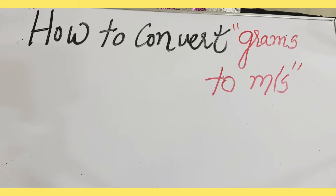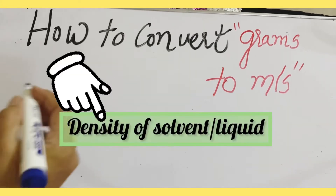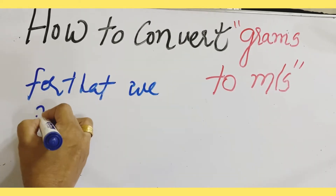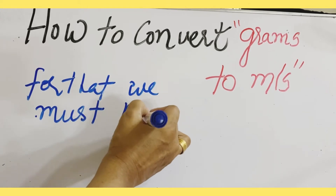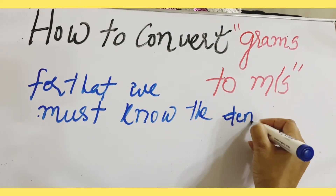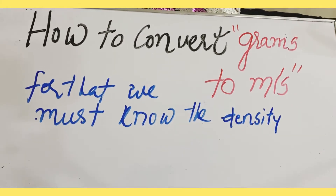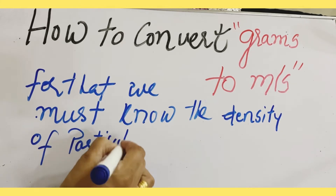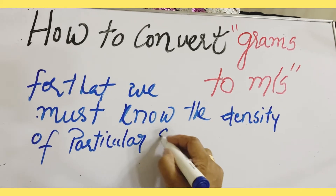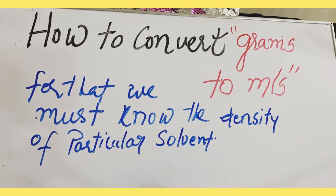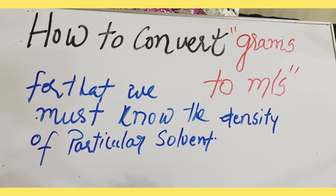To convert grams to mls, the first and most important step is to know the density of that particular solvent. Whenever I ask students, they give me the answer that one gram equals one ml — but that is not a hard and fast rule for all solvents. It's only true for pure water.